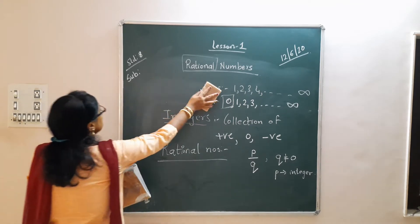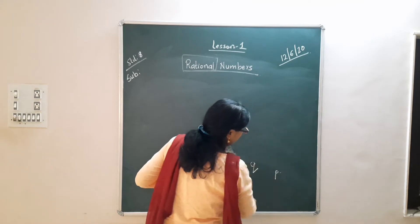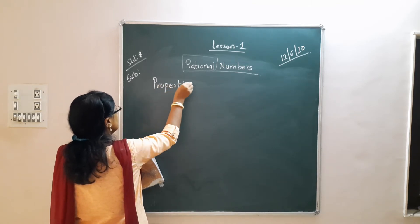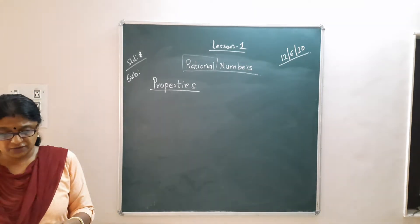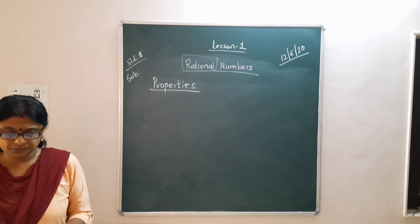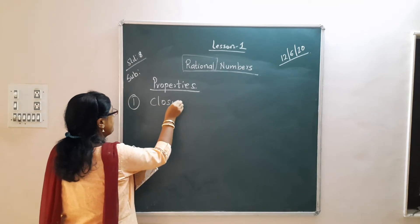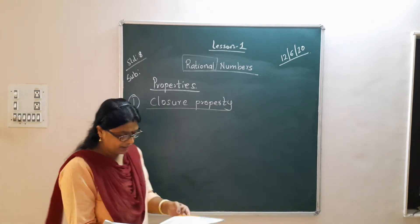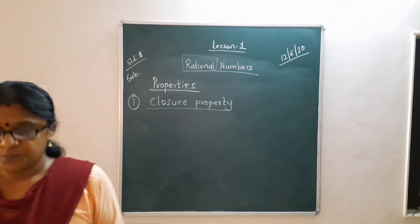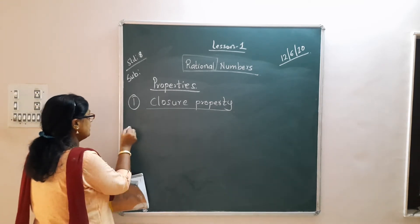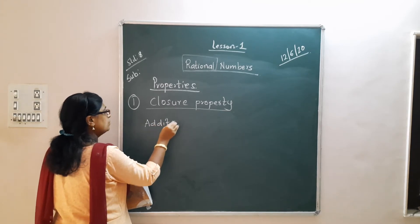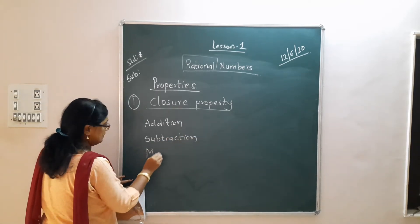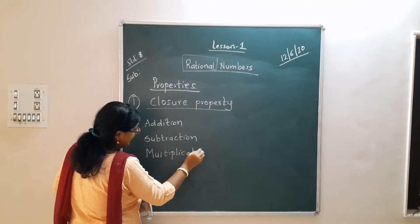Now let us see the properties of rational numbers. The first property is closure property. You can see it on page number 2. In closure property, we have addition, subtraction, multiplication, and division.